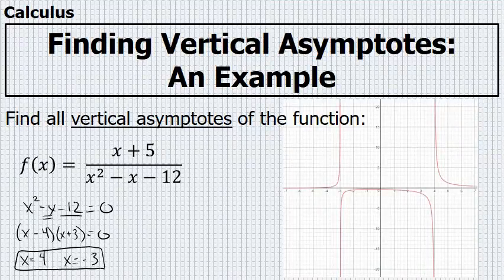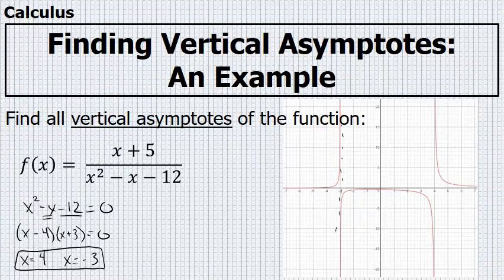Taking a look at the graph, we can see that there is, in fact, a vertical asymptote at x = -3, and there's also a vertical asymptote at x = 4.